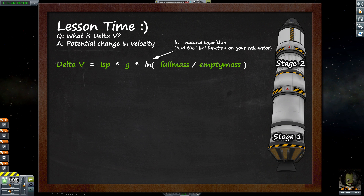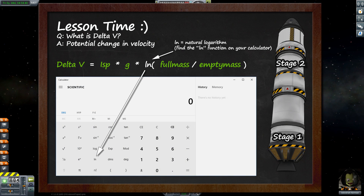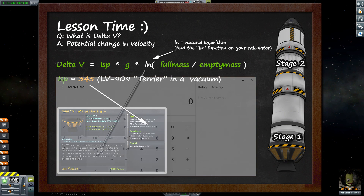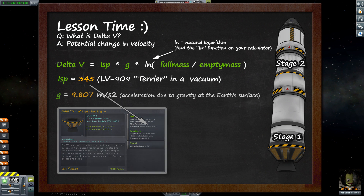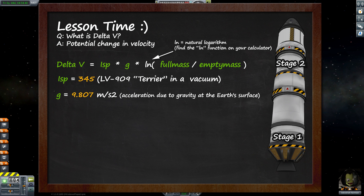LN is the natural logarithm. You can use the LN button in your scientific calculator — this is just a Windows calculator — but any calculator should have a natural logarithm function, which is quite easy to use. We need to have a look at the ISP of our engine. The ISP is 345 in this case for both stages. Our G variable is a static variable, which is 9.807. This is the acceleration due to gravity at Earth's surface, and it's used to calculate the ISPs of an engine in Kerbal Space Program. This value doesn't change at all in any of your calculations — it's always the static 9.807.